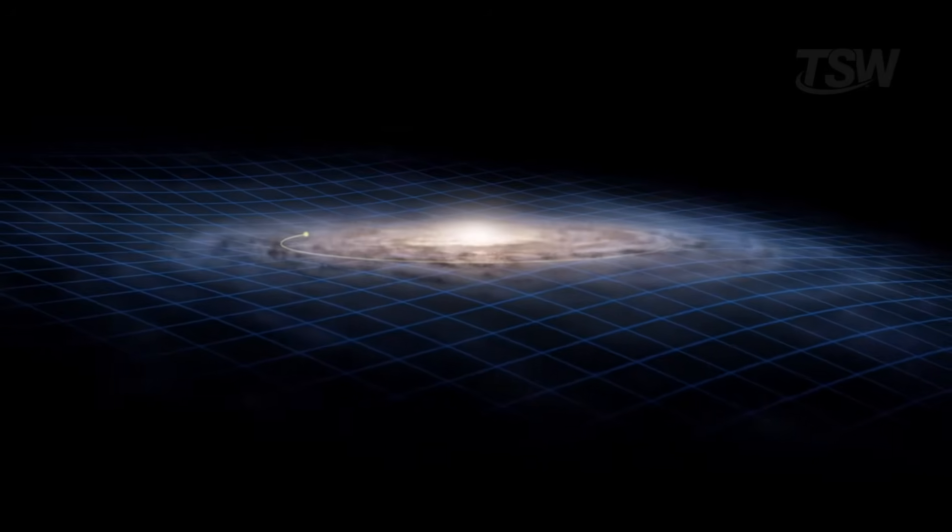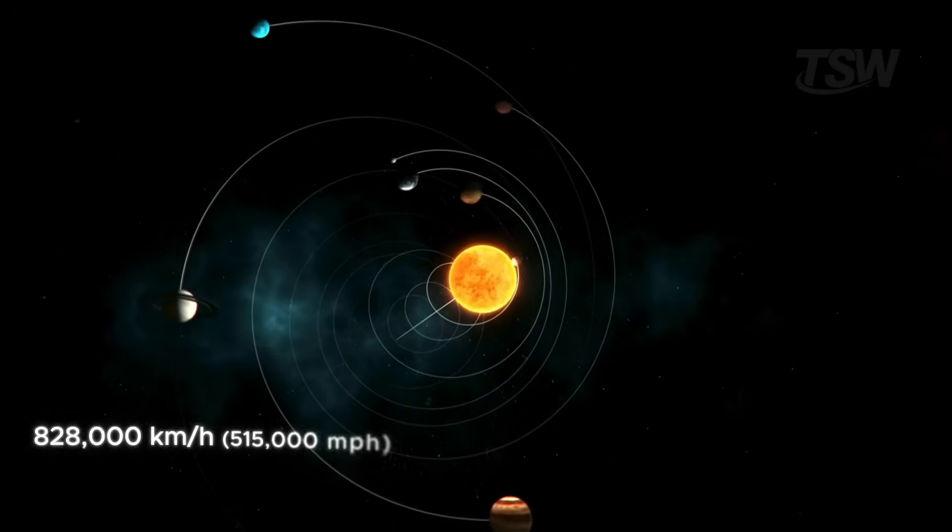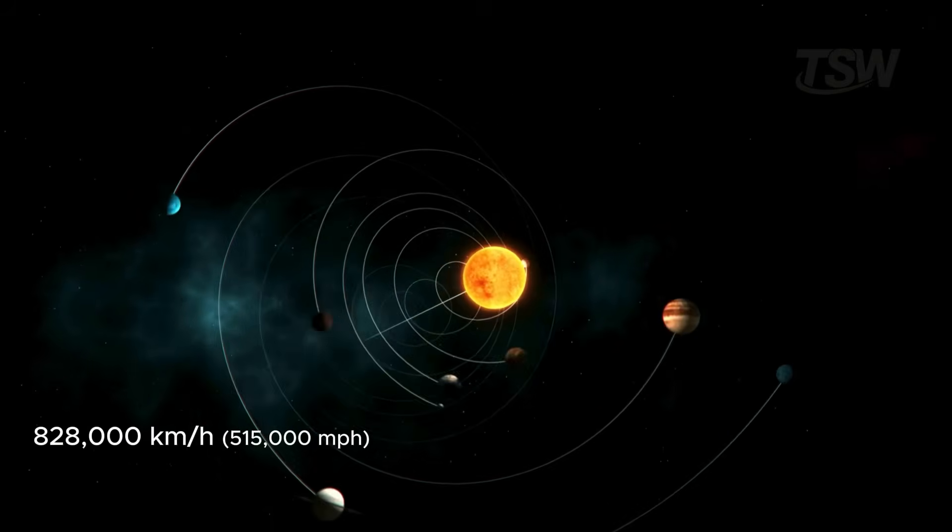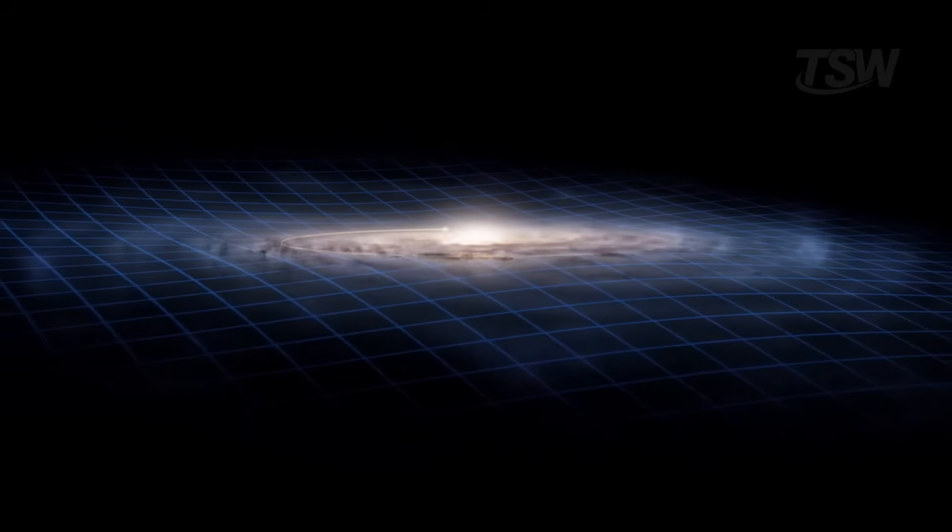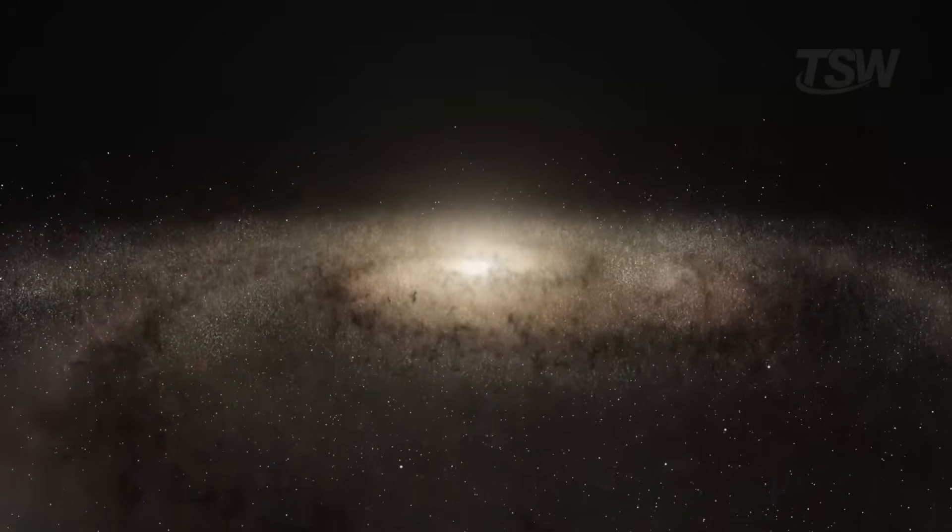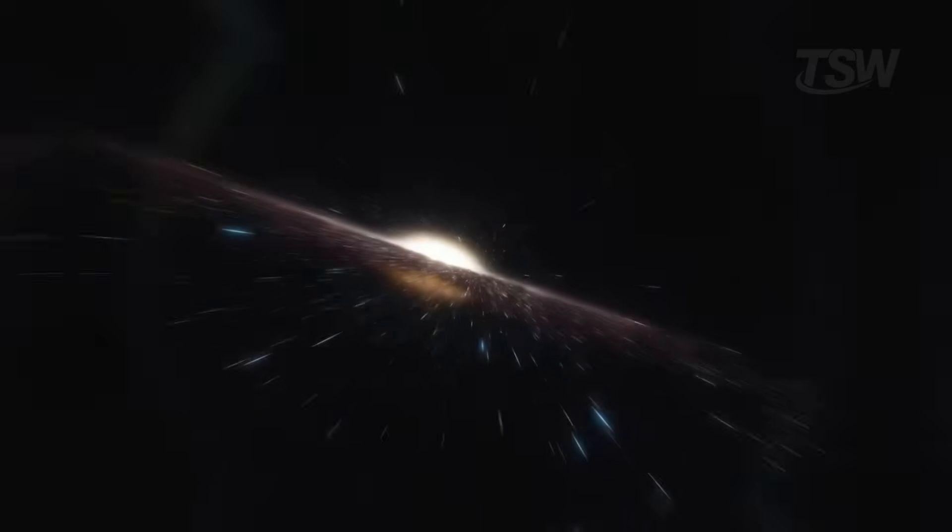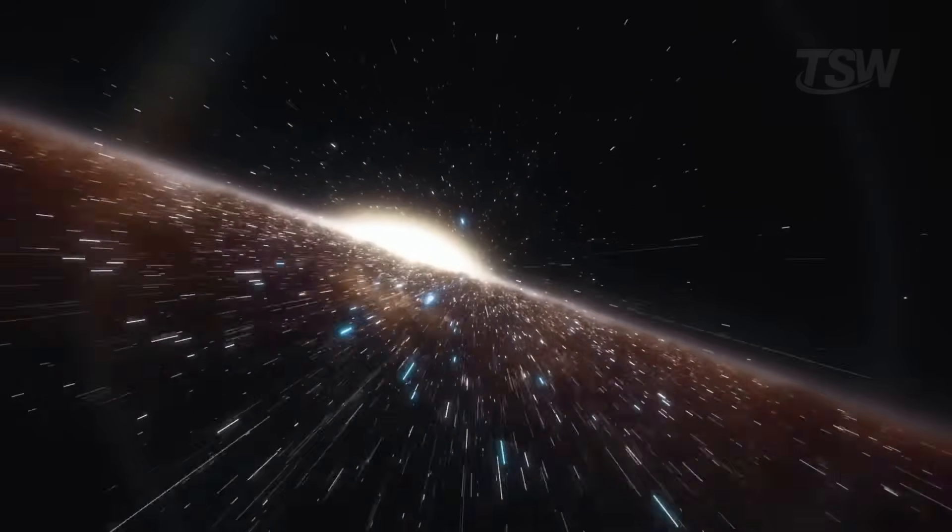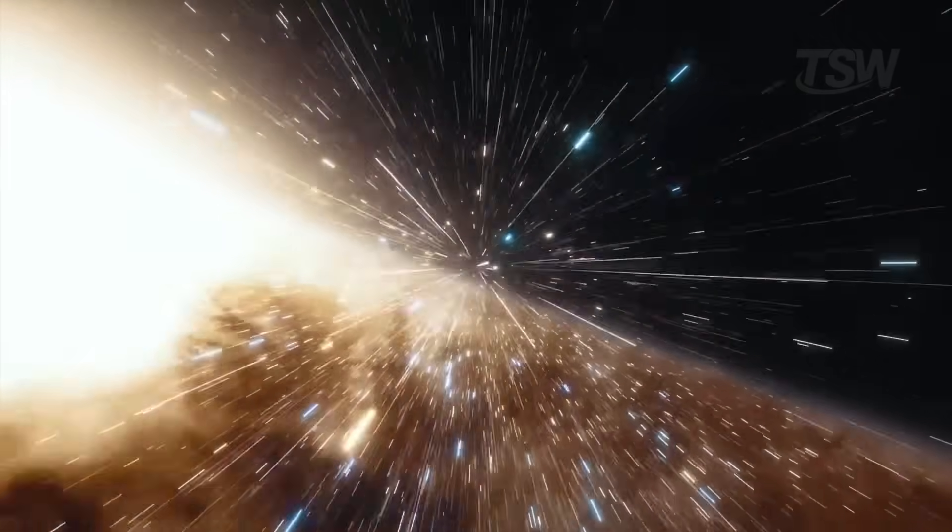As for our motion, it's anything but trivial. While we orbit the center at around 828,000 kilometers per hour, we don't follow a perfect circle. Our path is slightly elliptical and also wobbles above and below the disk's mid-plane. At the moment, we're about 55 light-years above that plane. It may sound small on the galaxy's scale, but this oscillation affects how much interstellar matter we pass through along our journey, and as a result, the rate of impacts, exposure to radiation, and other conditions in the cosmic environment we're immersed in.